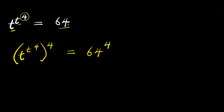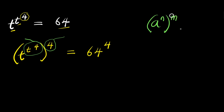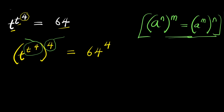Now, we are going to consider an identity, but before then, we are going to treat this t to the power of 4 as a unit, and also treat this 4 as a unit. The identity is: if you have a to the power of n, raised to the power of m, this equals a to the power of m, raised to the power of n. We will be making use of this identity, where t to the power of 4 represents n, and 4 represents m.